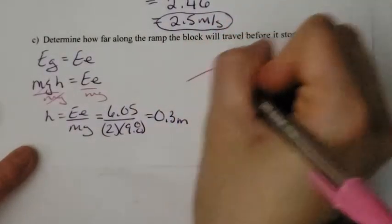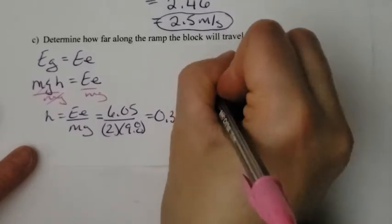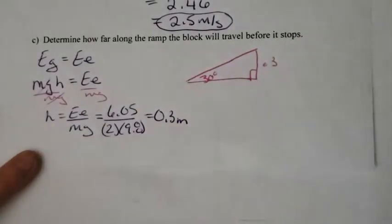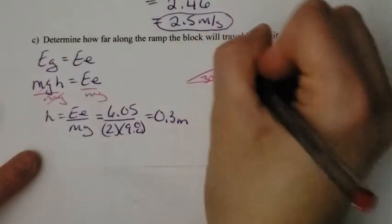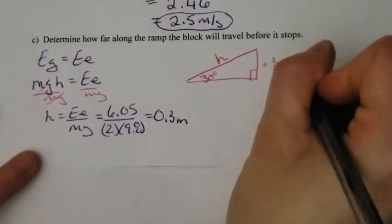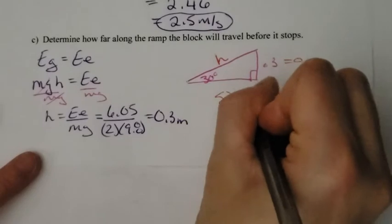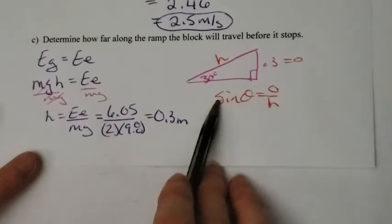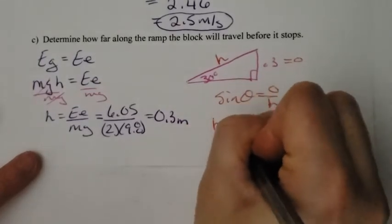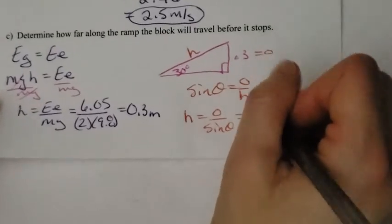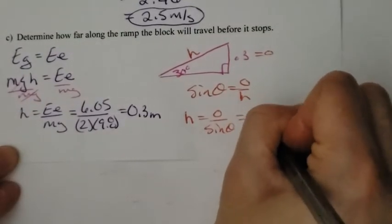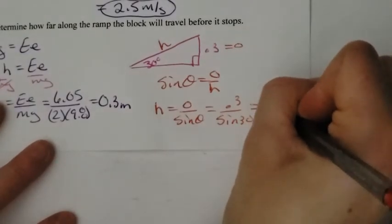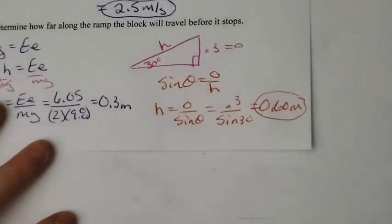I don't want the height straight up. I actually want how far along the ramp it's actually going to travel. So when I think about this, here's my ramp, here's my right angle, this is 30 degrees, this height is 0.3. I'm looking for this distance. I just go back to basic trig. I know I'm looking for the hypotenuse of this right angle triangle. That's the opposite. So I'm simply just going to use sine. Sine theta is equal to opposite over hypotenuse. To get hypotenuse out of the bottom, multiply both sides by H, then divide both sides by sine theta. So I end up with H is equal to O over sine theta. Put in my numbers: my opposite I calculated to be 0.3 divided by sine 30 degrees. And I end up with 0.60 meters. I end up with 0.50 meters.